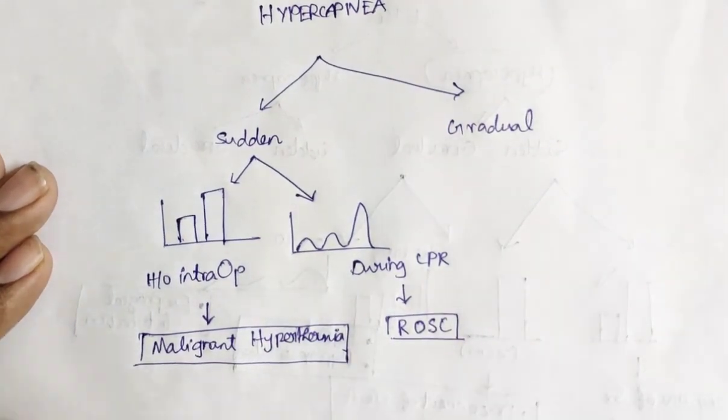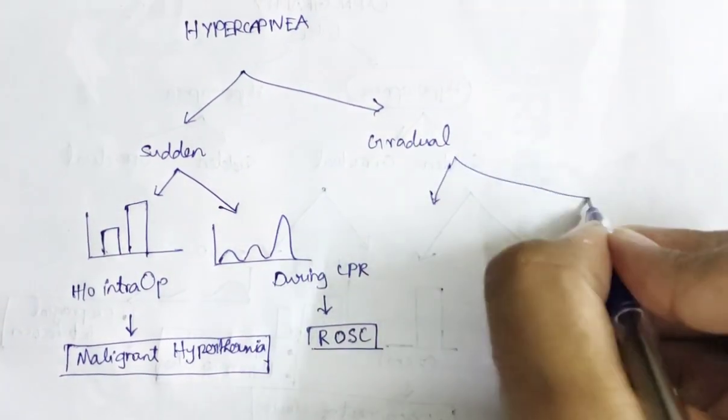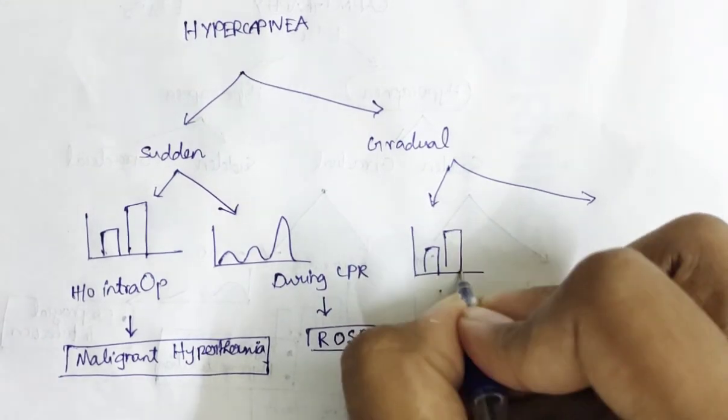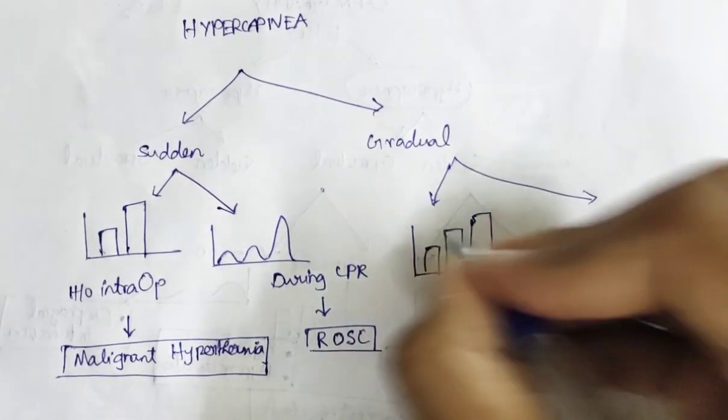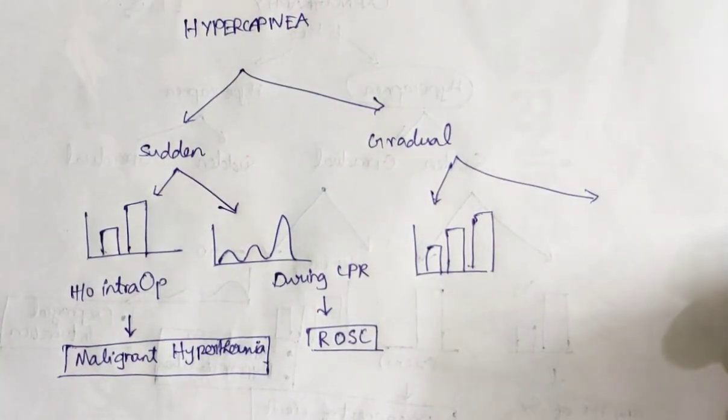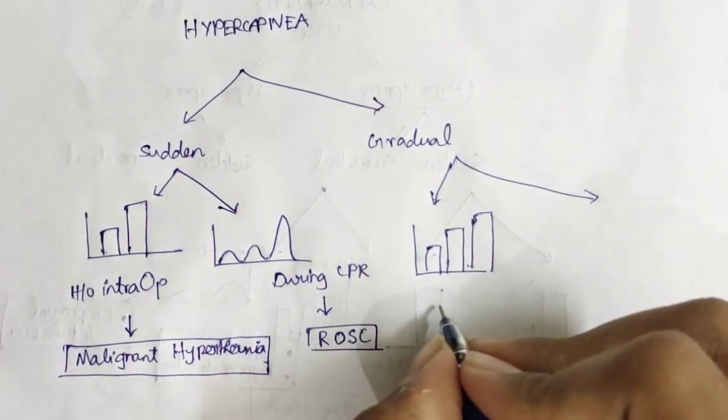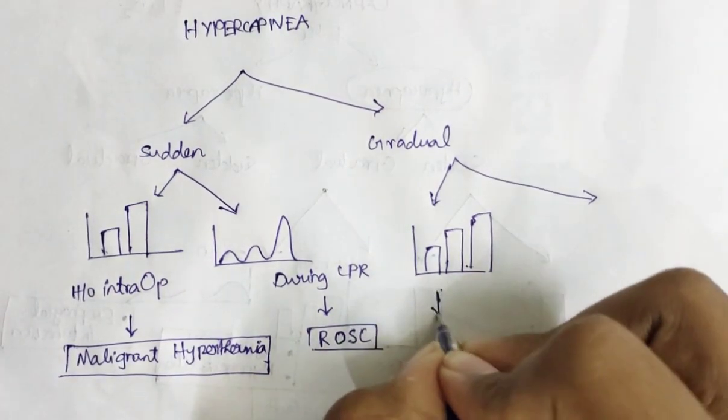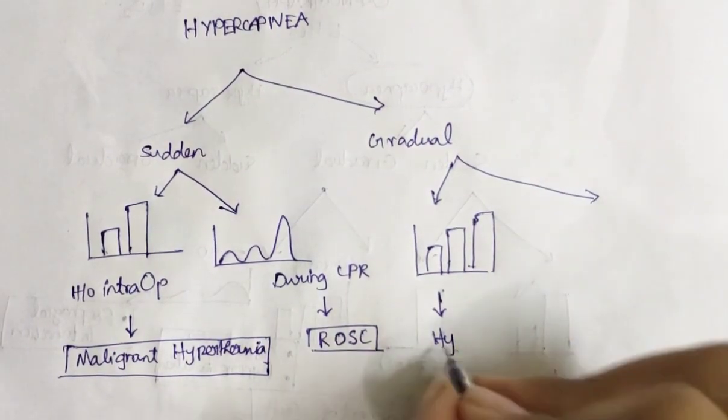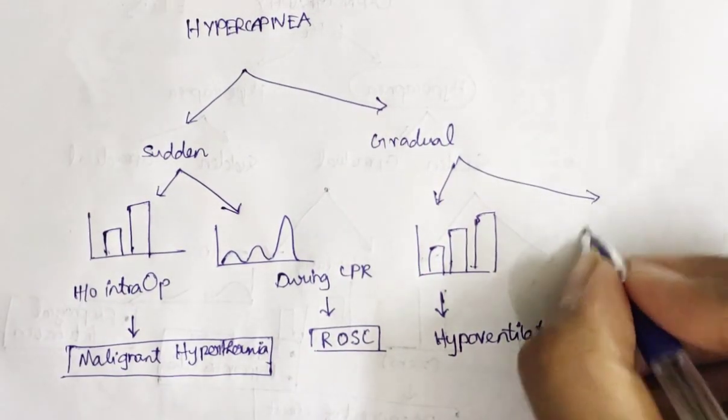Next is gradual. What if the chart is like this? It is gradually becoming hypercapnia, that is, EtCO2 is released more and more. What can be the reason for this? It is just opposite to hyperventilation. The answer is hypoventilation.